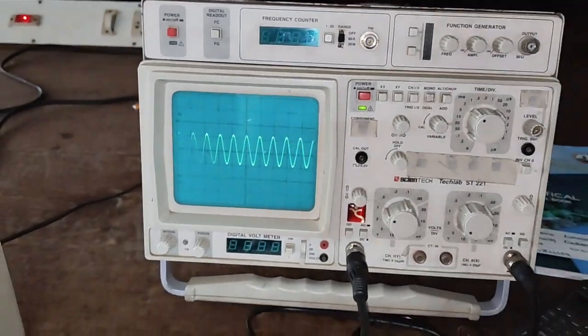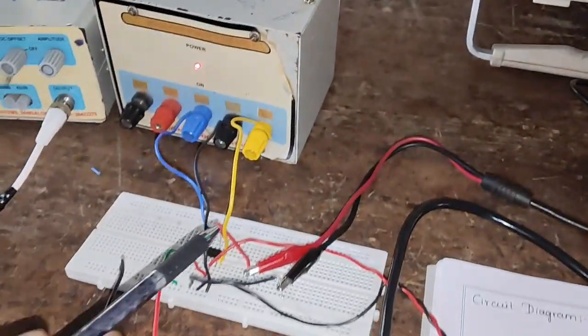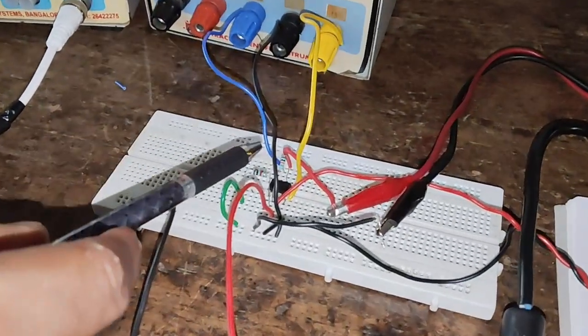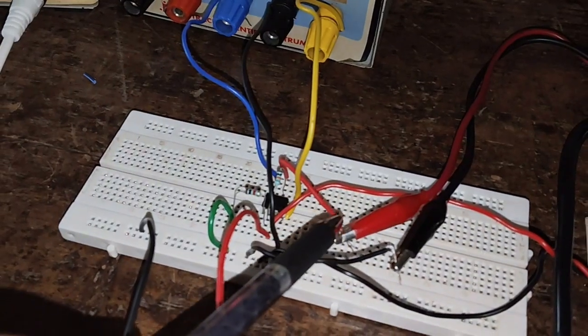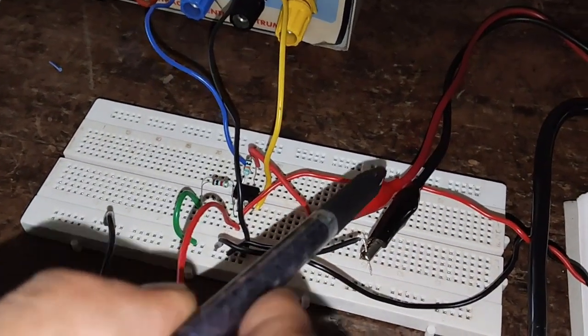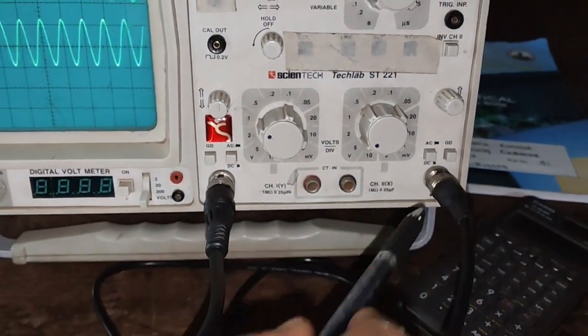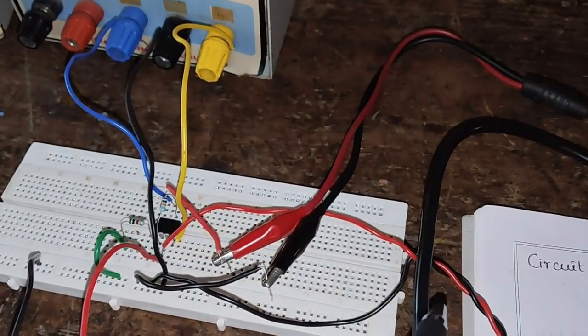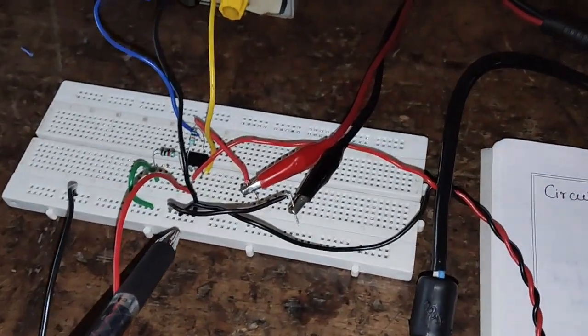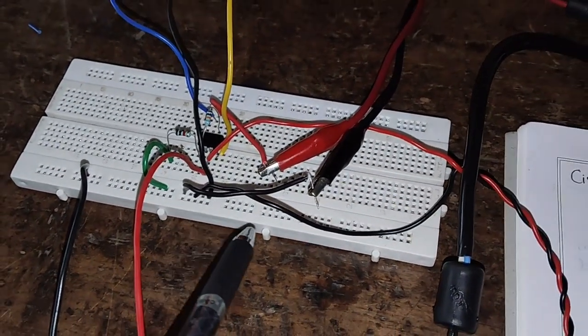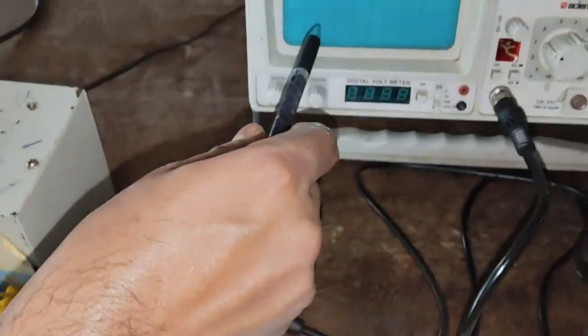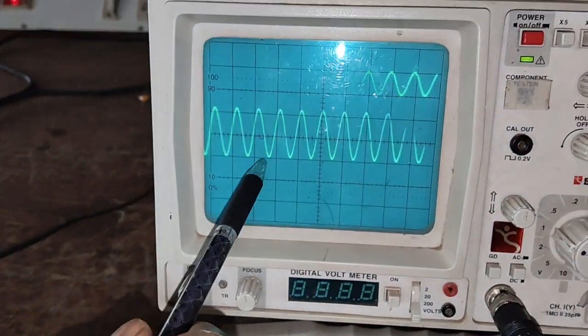Output is taken at pin number 6. Here, another channel of the CRO is connected to channel 2. Channel 2 positive is connected to pin number 6 and negative to ground. Now we get the output. Here we can see this is a non-inverting output.